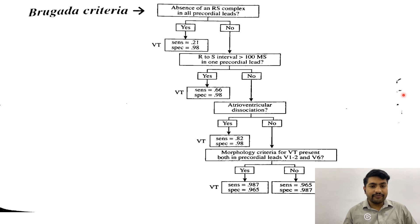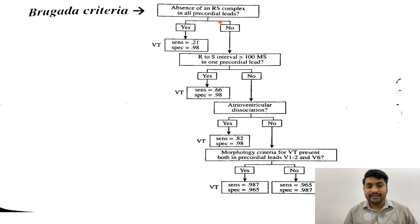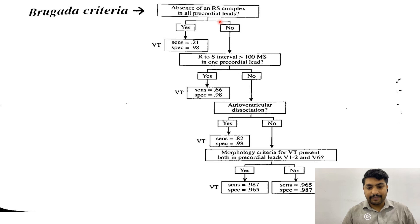How do we differentiate VT and SVT with aberrancy? Through a criteria called Brugada criteria, and it consists of four steps. The first step is absence of an RS complex in all precordial leads. Two important things here: first is precordial leads, and then is absence of RS complexes.